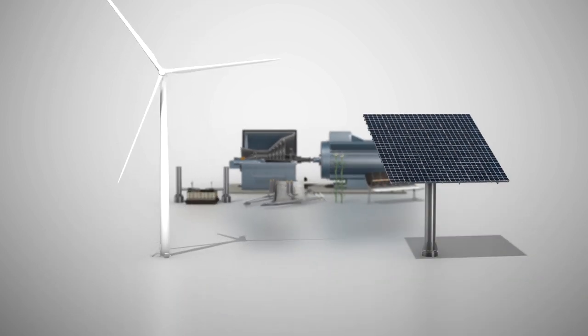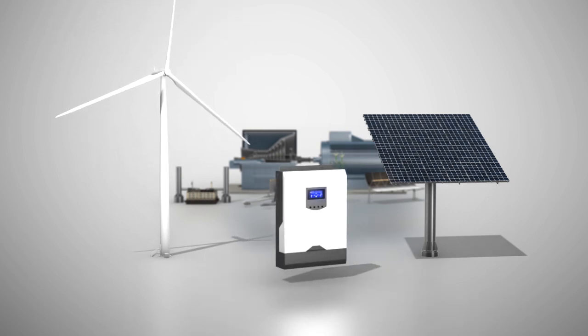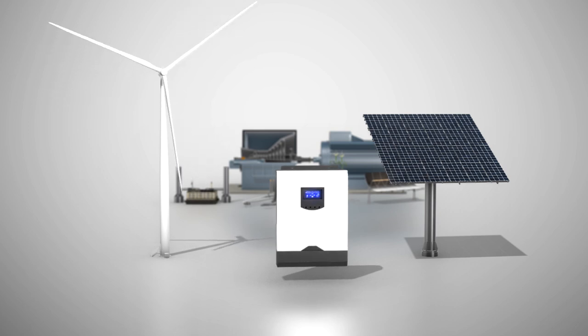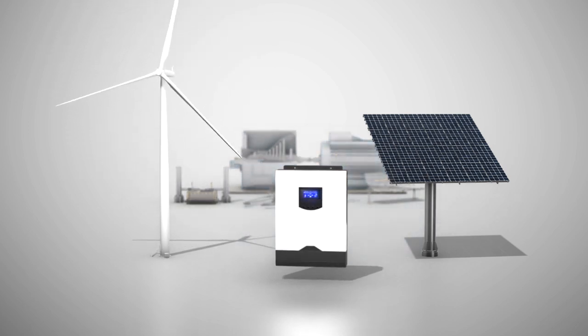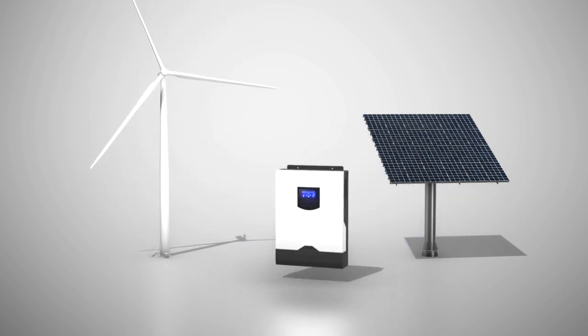But variable generation renewables like wind and solar PV don't use traditional generators. Instead, they use inverters, which have electronic controls that do not provide inherent inertial response. And when we add inverter-based renewables and start turning traditional generators off, we have less inertia on the system. Does this mean doom for the grid? No.